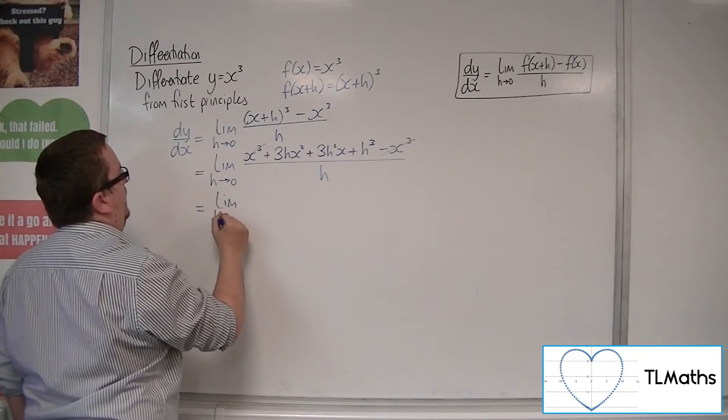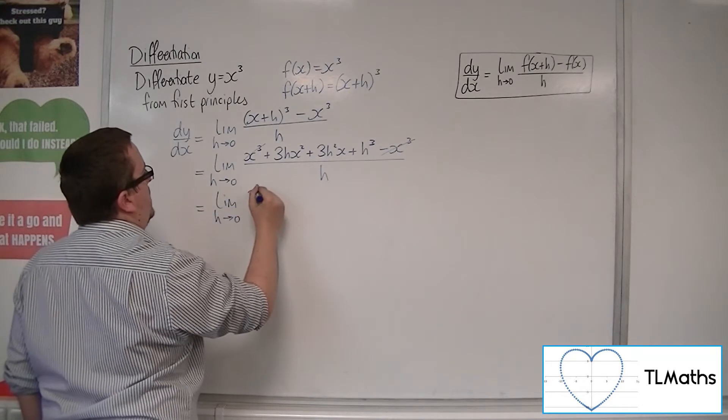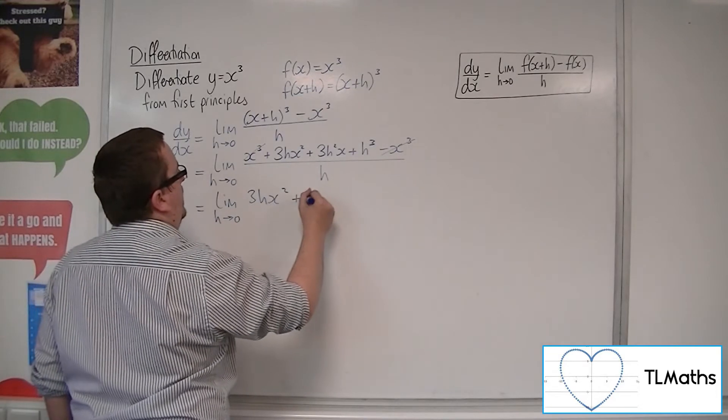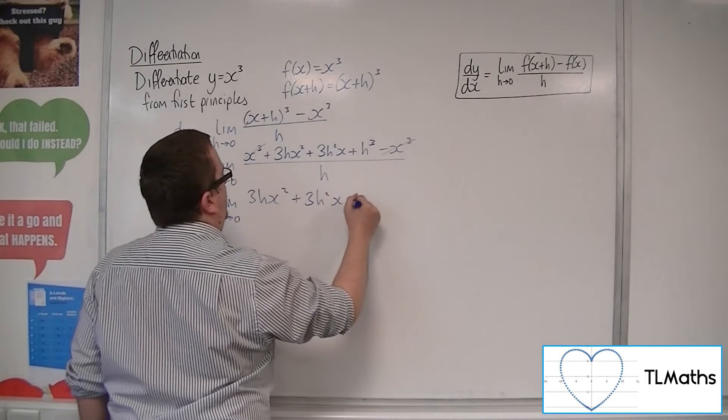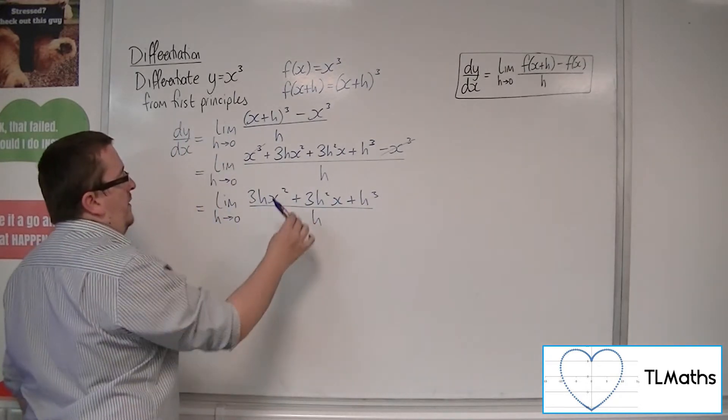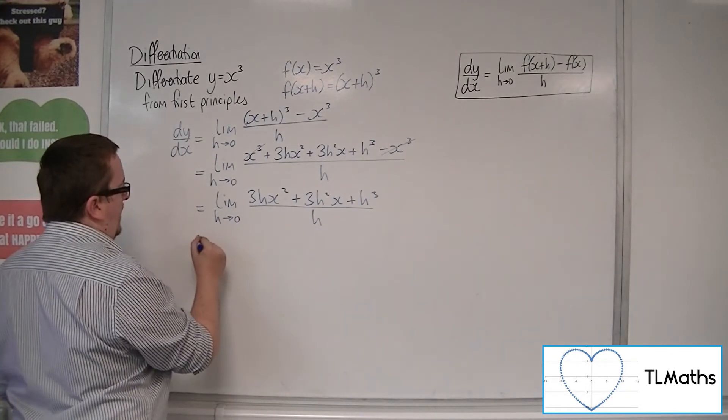So leaving us with 3hx² plus 3h²x plus h³ all over h. Now these have a common factor of h, so I can cancel through.